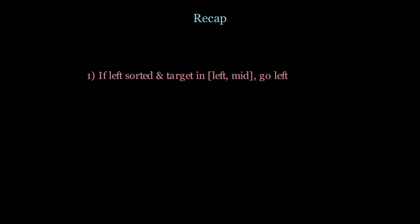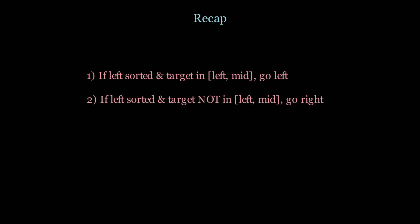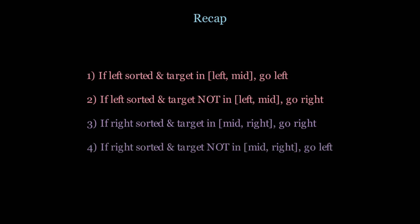Let me give an overview and recap. If the left side is sorted and the target is within the left range, then we go left. If the left side is sorted but the target is not in the left range, we must go right — that's the only possible way we'll find an answer. If the right side is sorted and the target is in the right interval, then go right. And likewise, if the right side is sorted but the target is not in the range, then go left. All of these run in log n time — this is basically just binary search, but we have to be careful with the conditional checks regarding the left, mid, and right pointers.